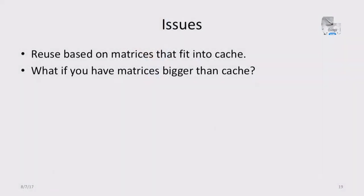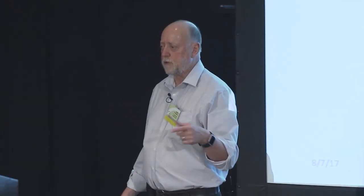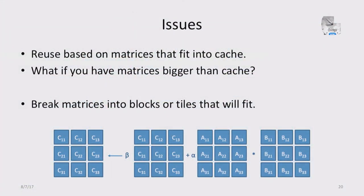What if the matrix doesn't fill cache? What if we have matrices bigger than the cache? We think about blocking — loading blocks so that they do fill cache and doing operations on those blocks. Think of matrix multiply as six loops instead of three, where the innermost loops do a matrix multiply on a block and the outer loops run around the blocks. So instead of these being full matrices, you can think of them as blocks and do the operations on the blocks.